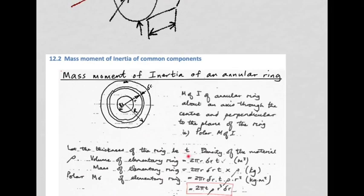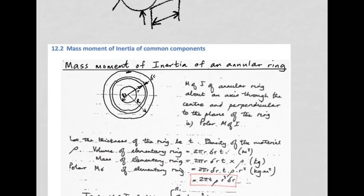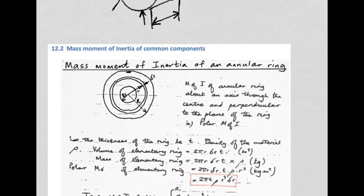Each elementary ring has thickness t into the page. Its volume is found by unrolling the ring into a straight strip of length 2πr (circumference), multiplied by delta-r and by thickness t, giving cubic meters. Multiplying volume by density gives mass in kilograms. For the mass moment of inertia of each elementary ring, we multiply mass by r² — consistent with taking mass times distance squared to the axis.